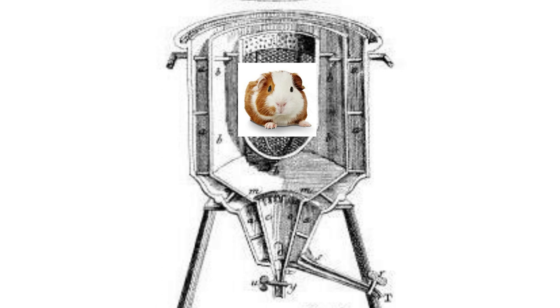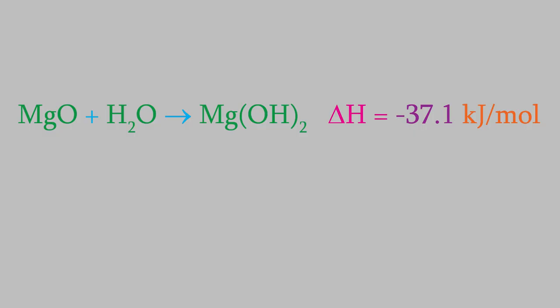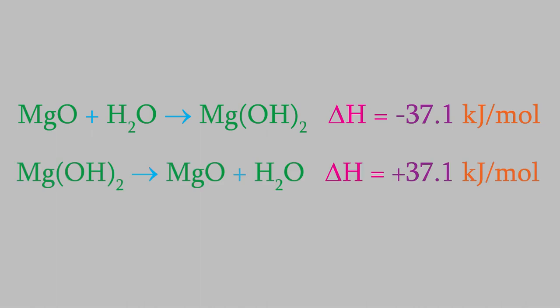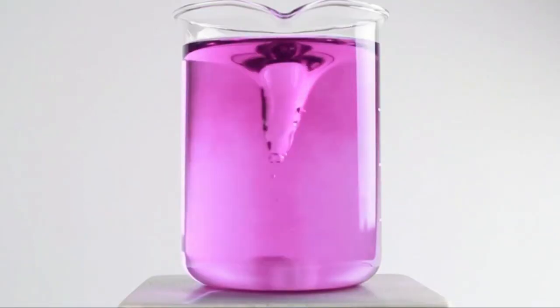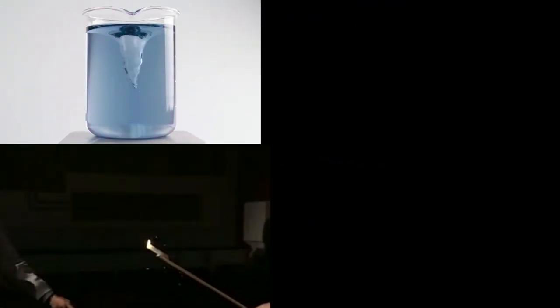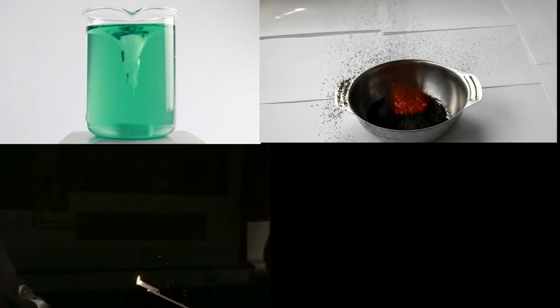You may recall that last time we saw that every chemical reaction has an enthalpy. For example, we looked at a reaction which has an enthalpy of negative 37.1 kilojoules per mole of magnesium hydroxide produced. As we learned last time, if we run this reaction in reverse, the enthalpy changes sign. So the reverse of this reaction would have an enthalpy of positive 37.1 kilojoules per mole. It turns out that this fact is one of the two principles that will allow us to find the enthalpies of thousands of new reactions, even if we're the first people ever to study the reaction.